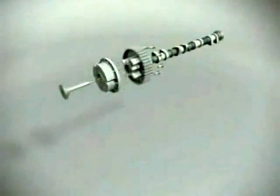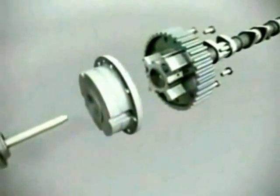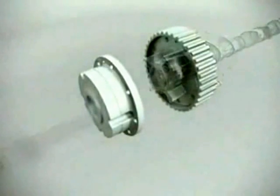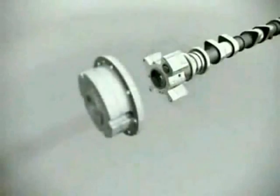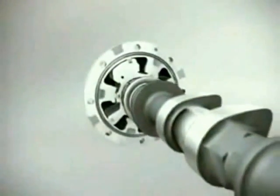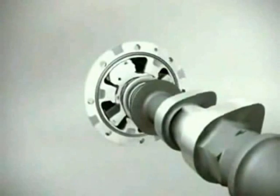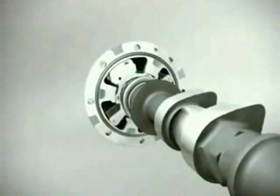The VCT unit consists of a housing and a rotor with four fixed vanes. The housing is bolted to the belt sprocket, thus rotating with the engine. The rotor vane is bolted to the camshaft and fits into the housing, where it can rotate relative to the vane housing, typically between 45 and 50 degrees crank angle.